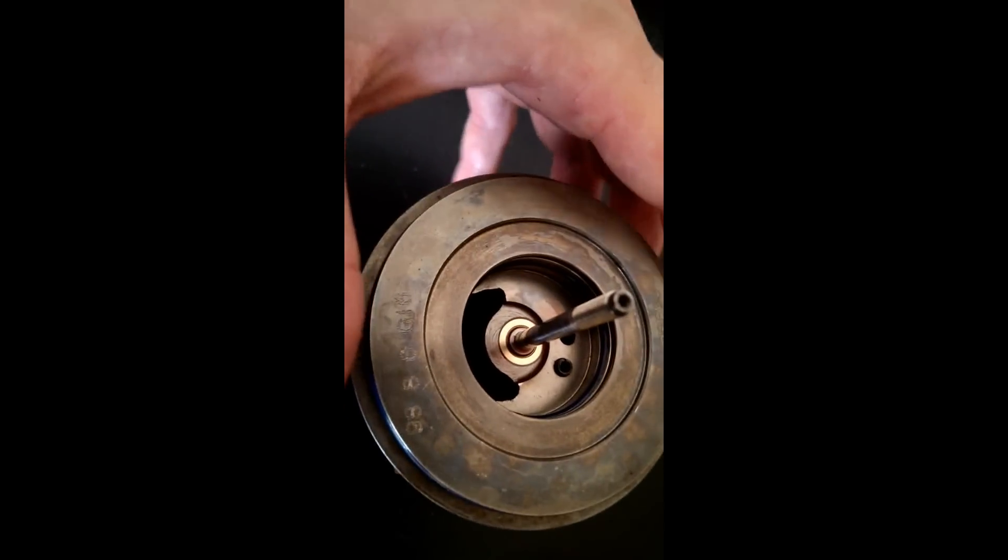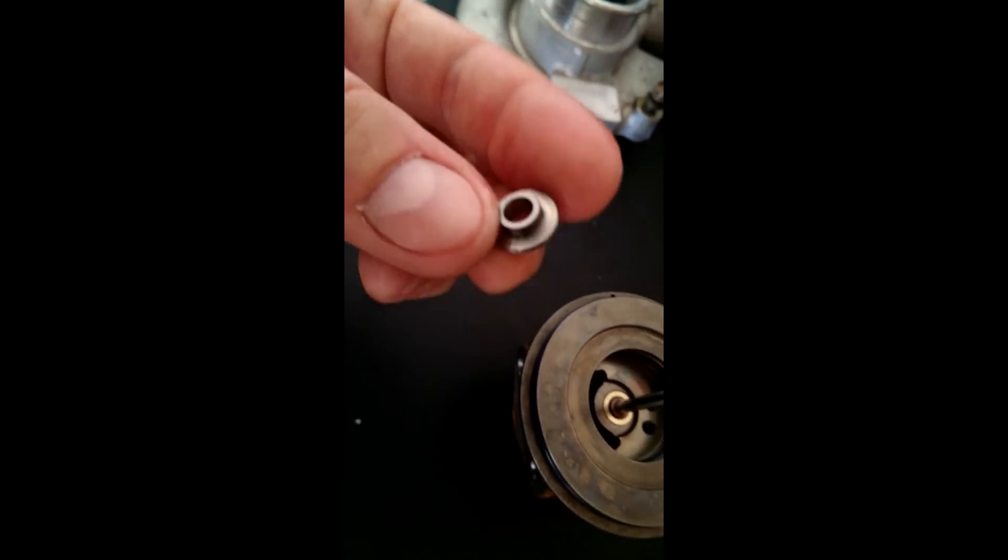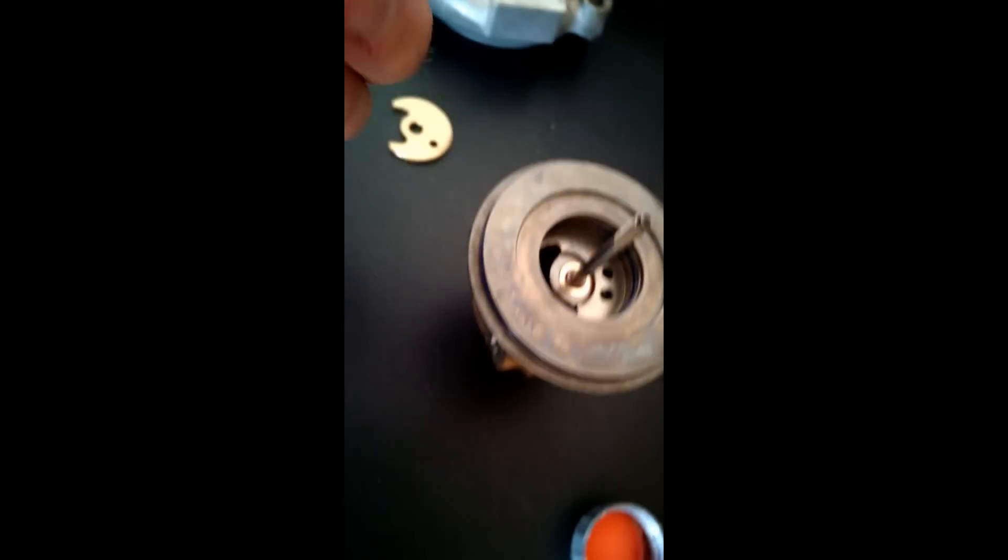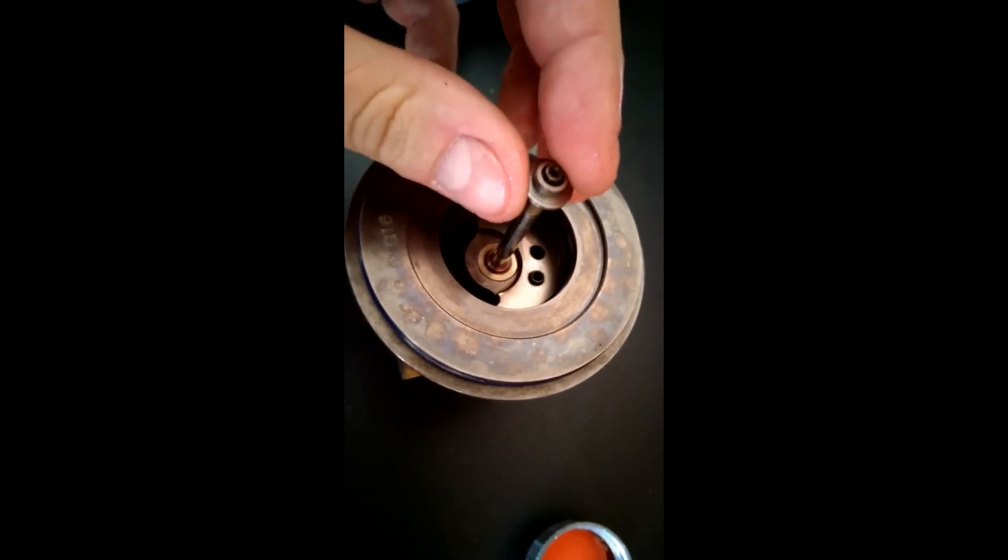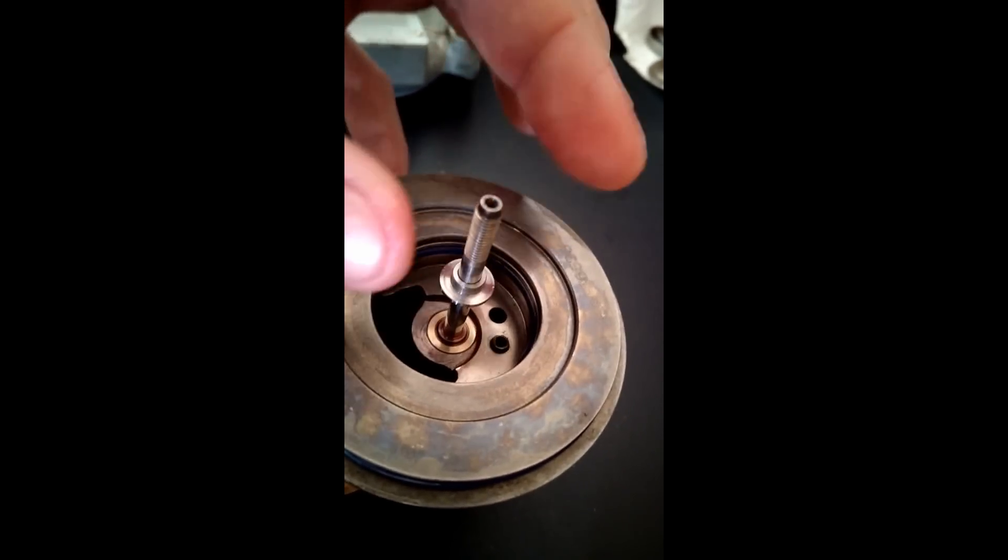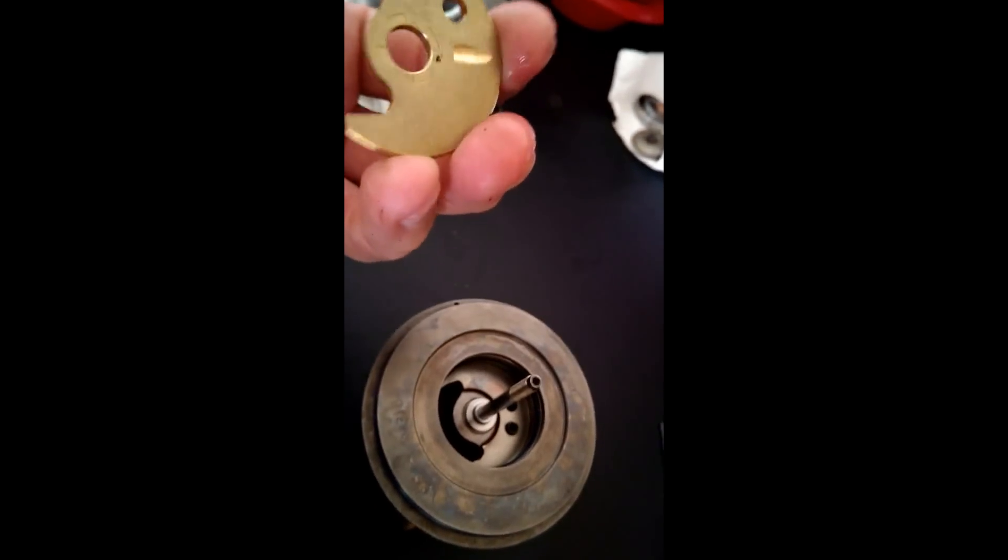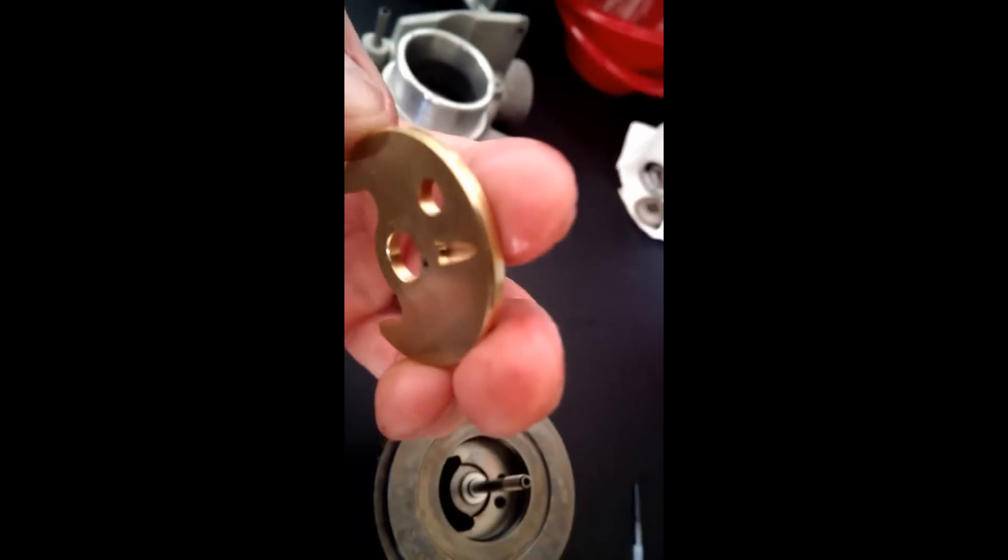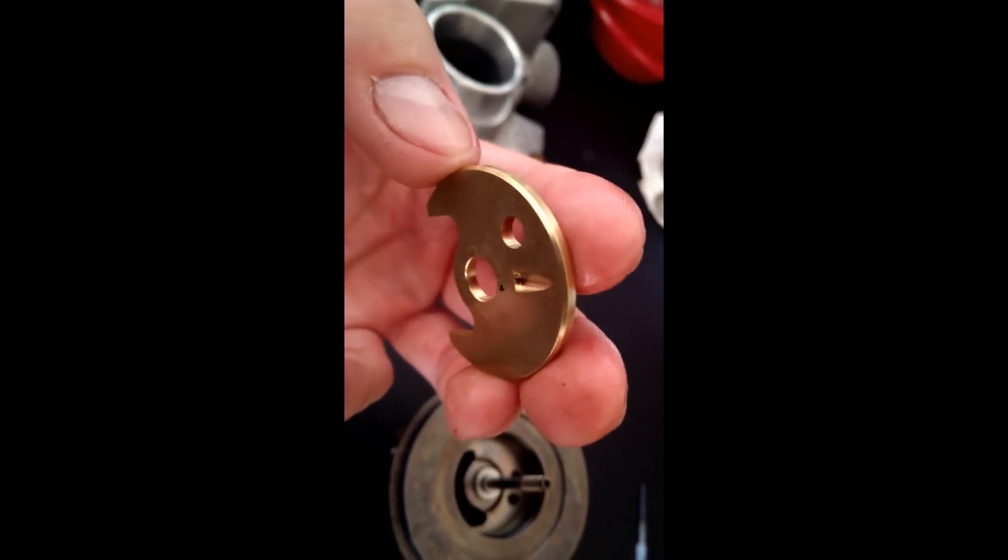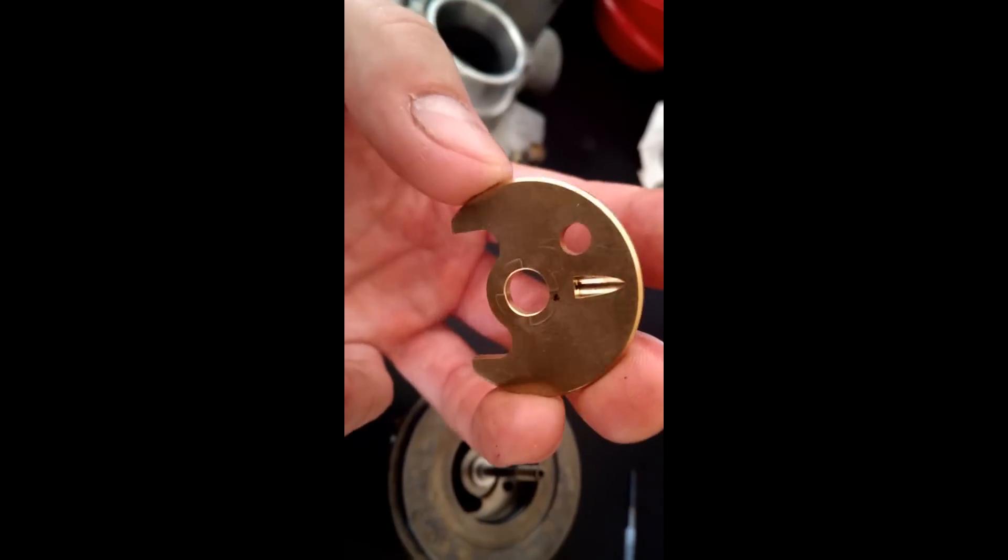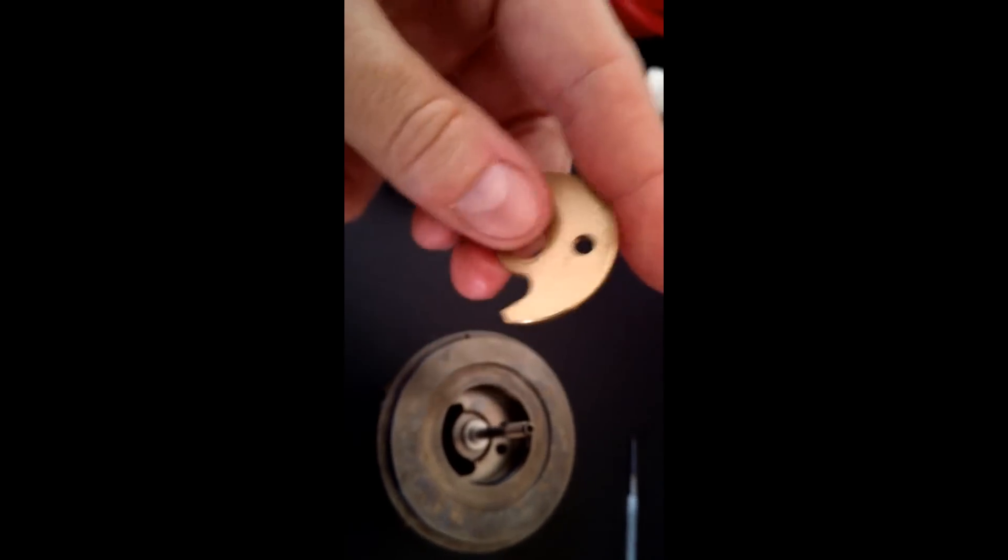Okay. The next thing that goes in is a 360 degree thrust collar, and that goes in like this with the edge facing up and just right in there like that. Then next is our thrust washer.